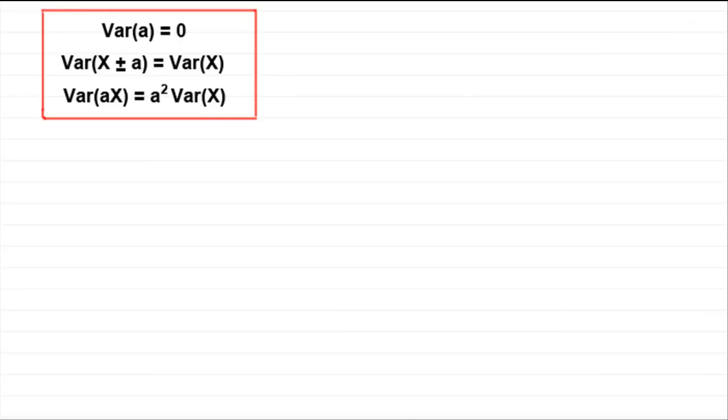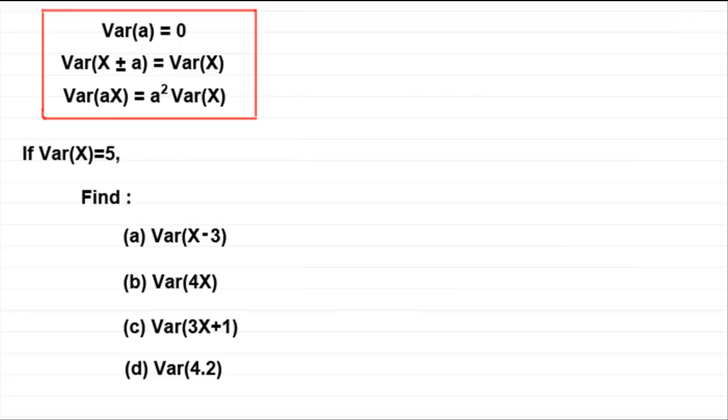Now, you're bound to get questions along lines like this. You're given the variance of the random variable X, and we're told that it's 5. And we've got to find out what the variance of our random variable X take 3 is.